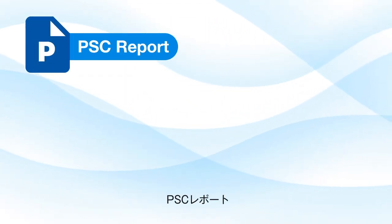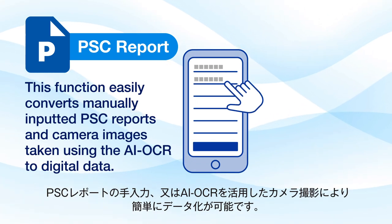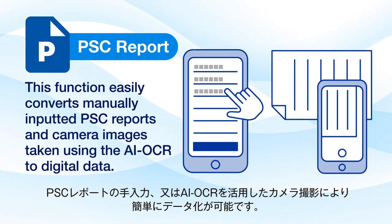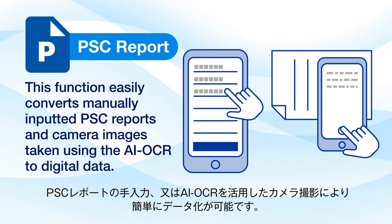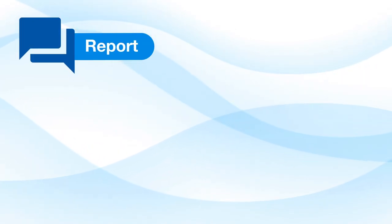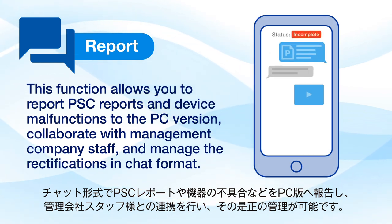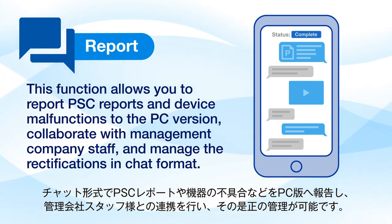First is PSC Report. This function easily converts manually inputted PSC reports and camera images taken using the AI OCR to digital data. Next is Report. This function allows you to report PSC reports and device malfunctions to the PC version, collaborate with management company staff, and manage the rectification in chat format.